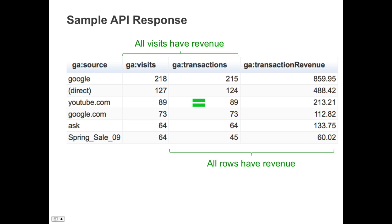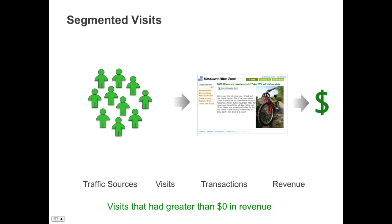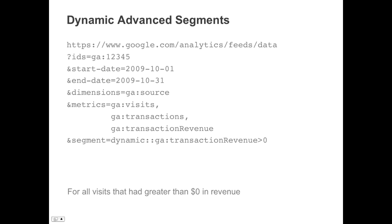Something to keep in mind is that the number of visits and the number of transactions might not be equal, because of revenue attribution and because some visitors might transact multiple times in their visits. By using the segment parameter, we have selected all visits with greater than zero dollars in revenue — what we set out to do. Because one can define segments directly through the API query, let's look at some examples demonstrating how powerful dynamic segments are. Our original query defined all visits with greater than zero dollars in revenue.